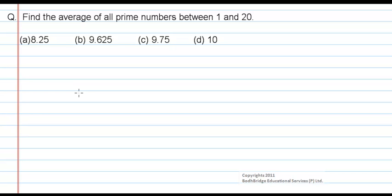Now let us work out a problem. Find the average of all prime numbers between 1 and 20. Options we have: 8.25, 9.625, 9.75, and 10.